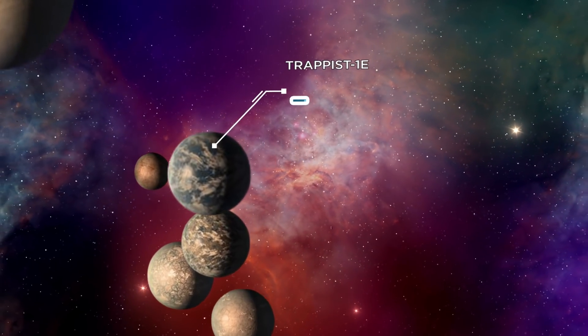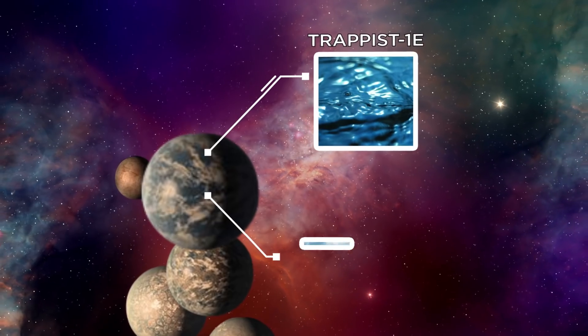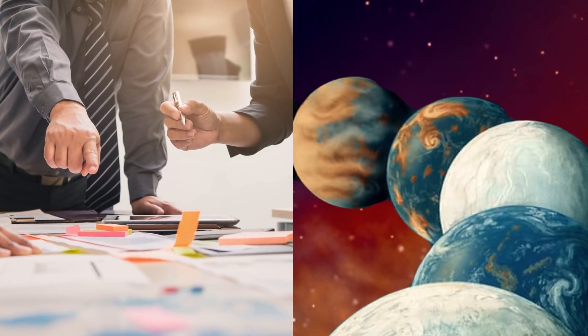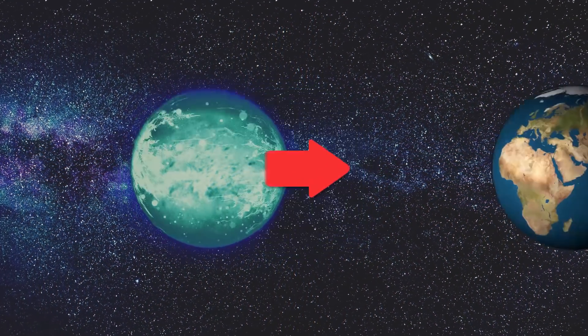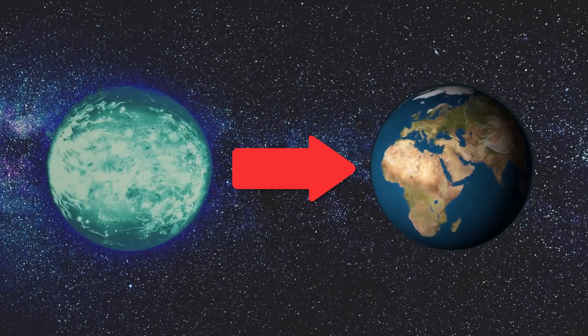One of them, TRAPPIST-1e, may actually have liquid water on its surface and a lot of oxygen. Researchers can better understand the evolution of planets through studying the TRAPPIST-1 system, which could then help them identify the processes that make a planet suitable for Earth-like life to exist.